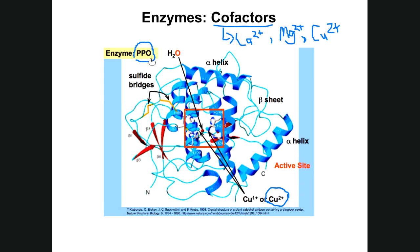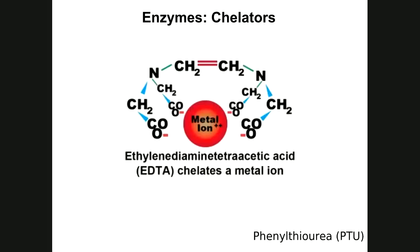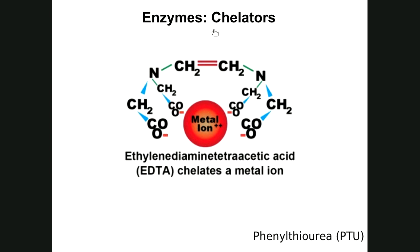Chelators remove cations from a solution. If you have a solution containing an enzyme, its substrates, energy, and the cofactor it needs — if you add a chelator to that solution, the chelator will remove those cations, meaning the enzyme loses its cofactor and can no longer function properly.